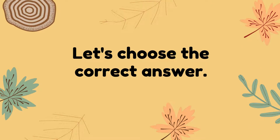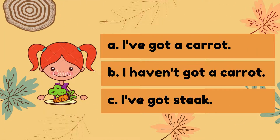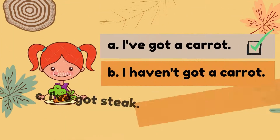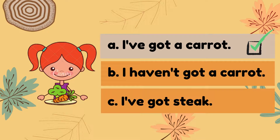Now let's choose the right answer. Are you ready? Let's start. The first one — look at the picture and what do we say? A: I've got a carrot. B: I haven't got a carrot. Or C: I've got a stick. Do you know the answer? Yes, the answer is A — I've got a carrot.